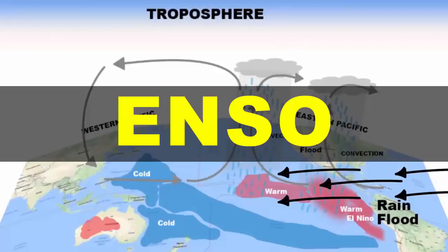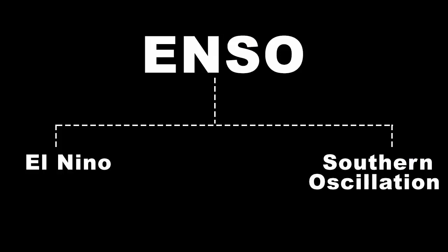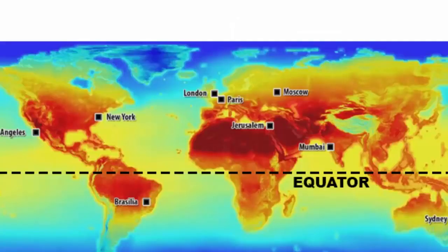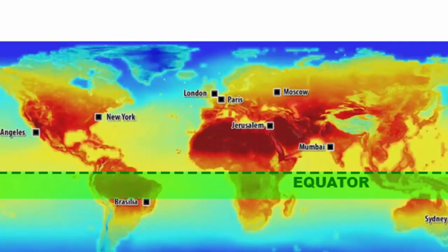In this video, we are going to learn about ENSO. If you break it down, EN stands for El Niño and SO stands for Southern Oscillation, because ENSO phenomena mostly occurs at the southern hemisphere, just right below the equator.